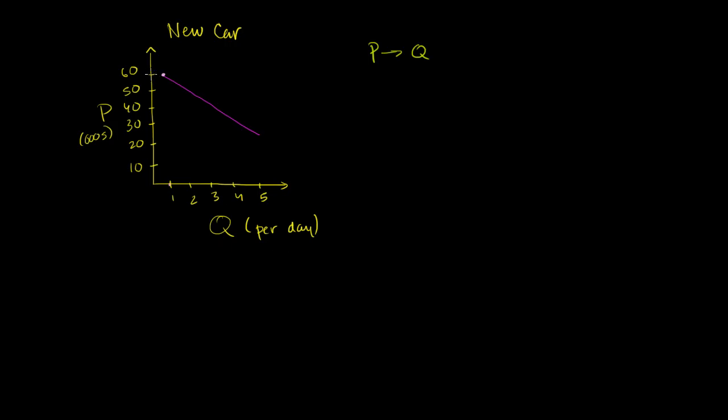if we price it at $60,000 per car, we are going to sell one car. And if we price it at $50,000 a car, we're going to sell two cars. So the way that I've been talking about it is, given a price, how many are we actually going to sell?